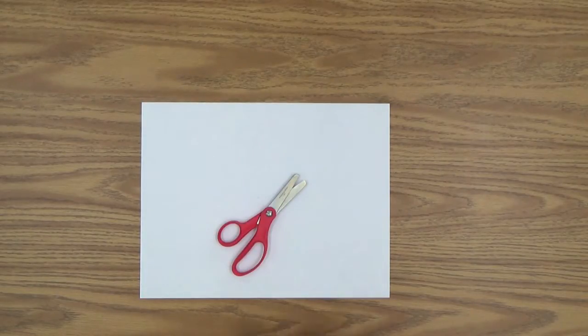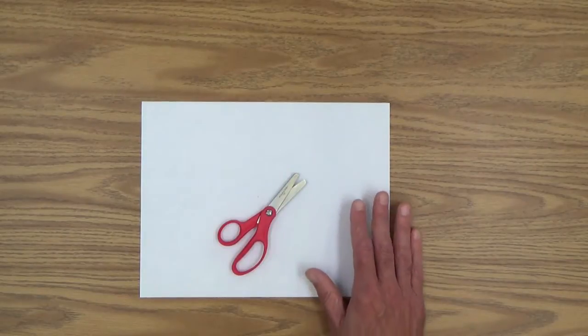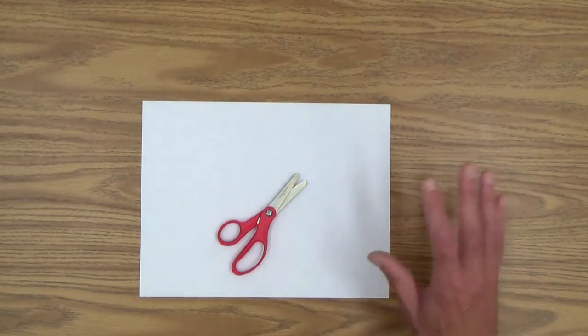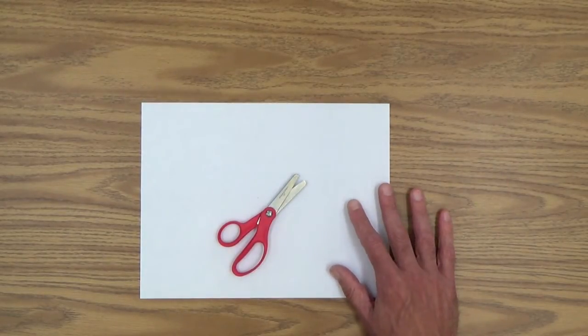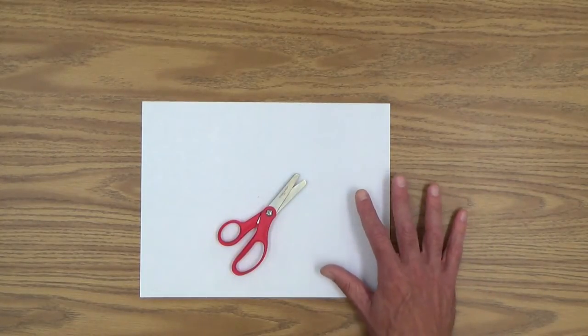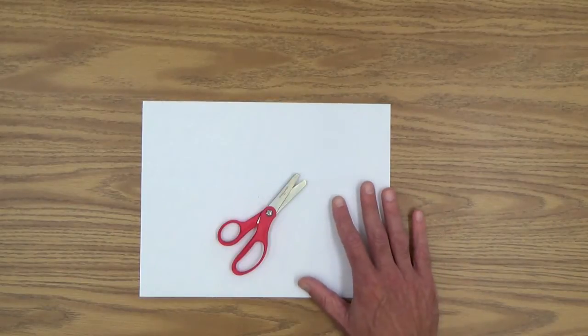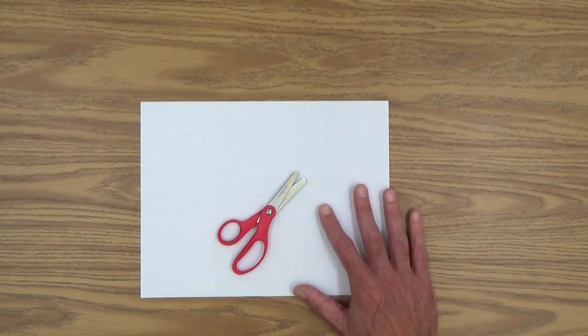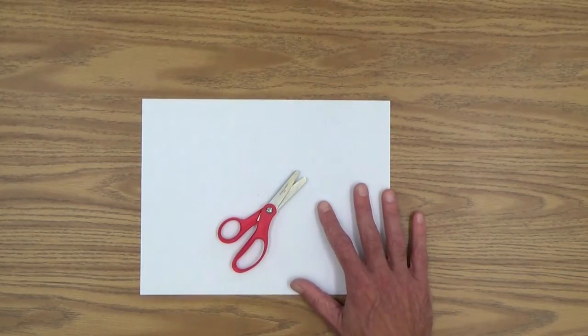We're going to do it with paper today. But of course, in real life, there's symmetry everywhere. 3D symmetry, just all kinds of symmetry. But we're going to keep it very simple today and just work with a couple sheets of blank paper.